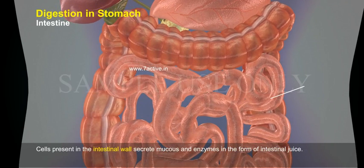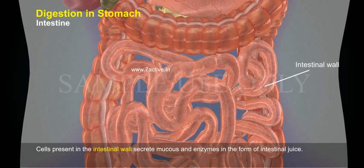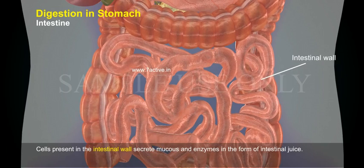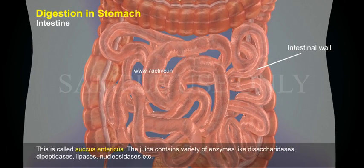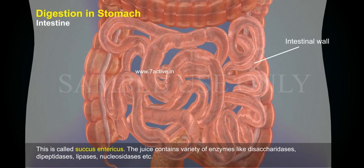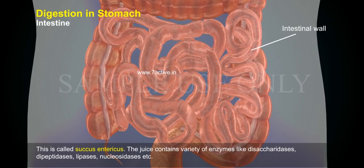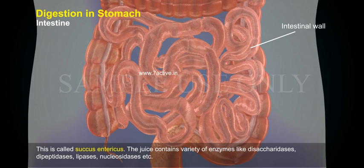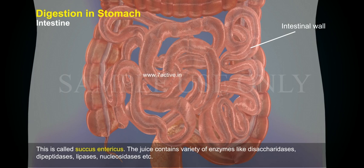Cells present in the intestinal wall secrete mucus and enzymes in the form of intestinal juice. This is called succus entericus. The juice contains a variety of enzymes like disaccharidases, dipeptidases, lipases, nucleosidases, etc.